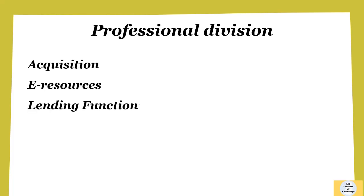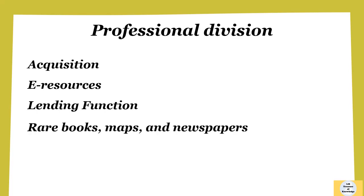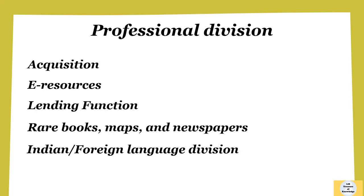The third category is the Lending Function, which covers the issue and return of books and library membership card activation. The fourth category is Rare Books, Maps and Newspapers — the National Library is the only library with a rich collection of old and rare manuscripts, maps, newspapers and clippings, which are preserved and made accessible to readers. The fifth category is the Indian and Foreign Language Division, providing materials in all 14 languages of the country as well as a rich collection of foreign language materials.